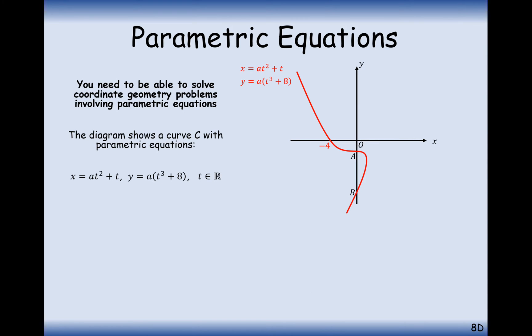We're going to be taking a parametric curve and looking at finding the x and y axis intercepts. Just a reminder that if it's intersecting the x axis then the y coordinate is equal to zero, and if it's intersecting the y axis then the x coordinate is equal to zero.